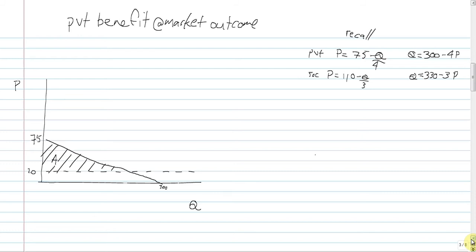So the first thing was the private benefit at the market outcome. I've posted the equations that we're interested in in the top right corner there. So this is just straightforward, what is the consumer surplus, that you should be familiar with even from first year.